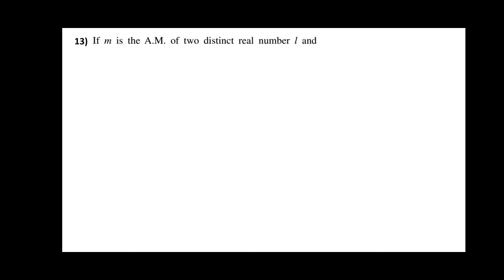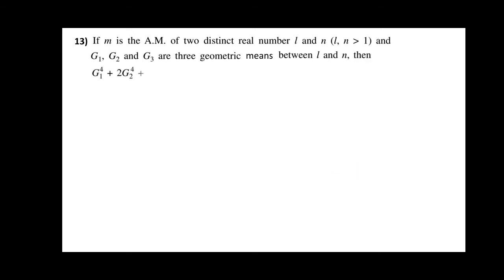Question number 13: If M is the arithmetic mean of two distinct real numbers L and N (L, N > 1), and G1, G2, G3 are three geometric means between L and N, then G1⁴ + 2·G2⁴ + G3⁴ equals: option A 4L²MN, option B 4LM²N, option C 4LMN², option D 4L²M²N².